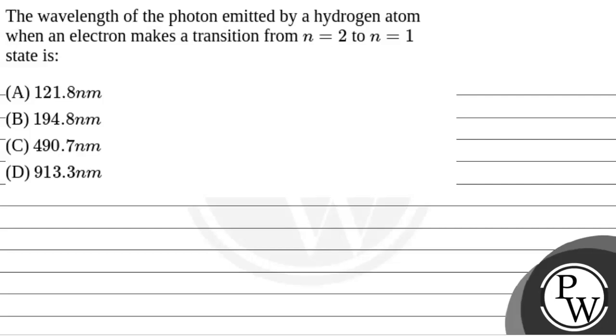Hello, let's read the question. The wavelength of the photon emitted by a hydrogen atom when an electron makes a transition from n equals 2 to n equals 1 state is.